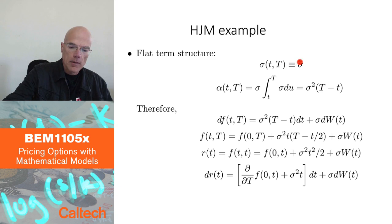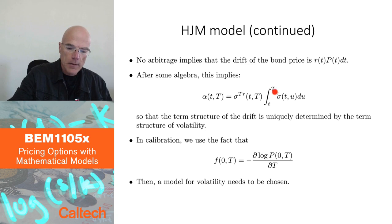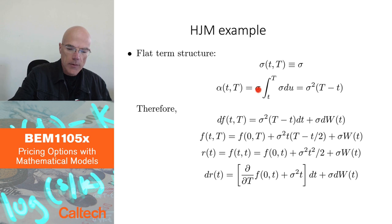We know from the previous formula that alpha has to be equal to sigma times integral of sigma. Now integral of this constant is just going to be constant times capital T minus small t, so we get sigma squared capital T minus small t. When you integrate just the constant.